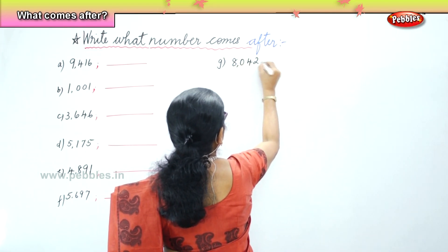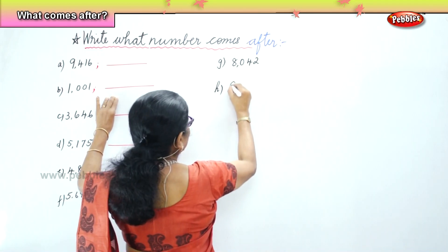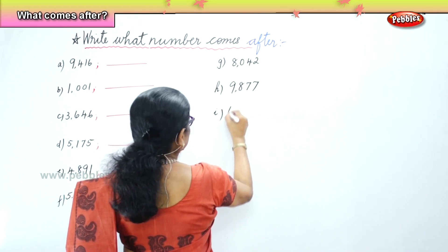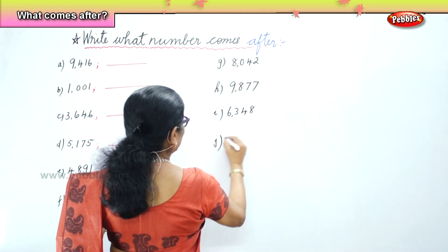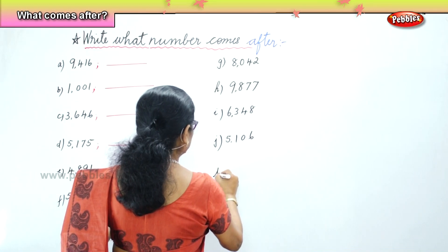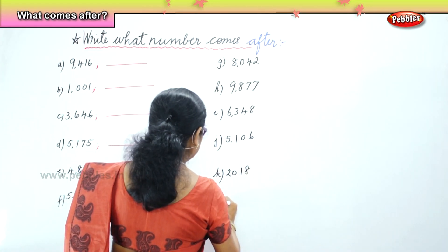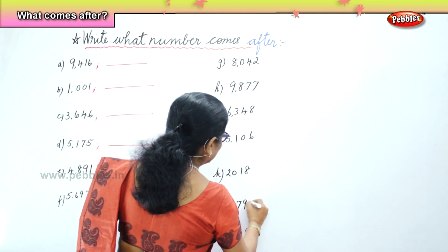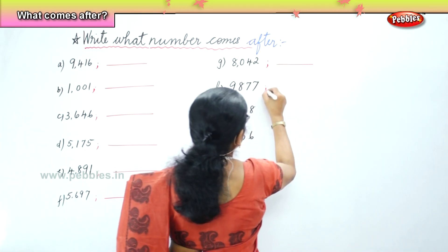8,042, 9,877, 6,348, 5,106, 6,001, 2,018, 4,794. Now, with the numbers that comes after. All right?